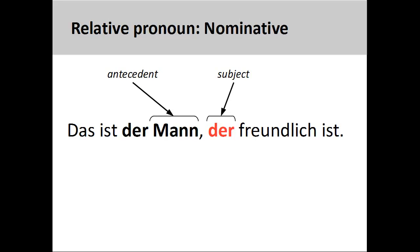In these examples, I will rely solely on a masculine singular noun, "der Mann," as an antecedent, as this shows most clearly the changes in the relative pronoun. In the sentence "das ist der Mann, der freundlich ist" (that is the man who is friendly), the masculine singular relative pronoun "der" is in the nominative case as it acts as the subject of the relative clause and provides more information about personal characteristics of the antecedent. You will recall that when the main verb of a sentence is "sein" (to be), you will use the nominative for both the subject and any predicate elements.